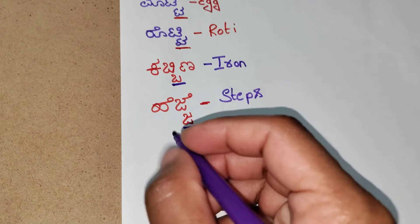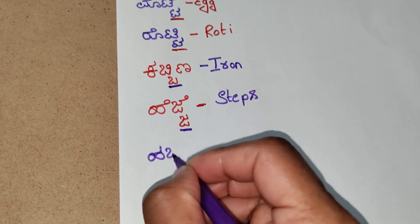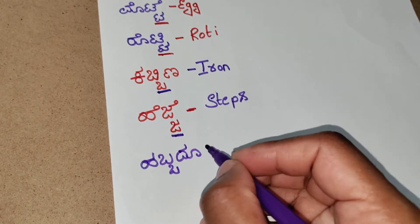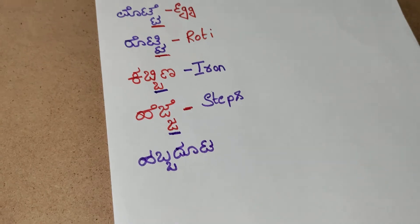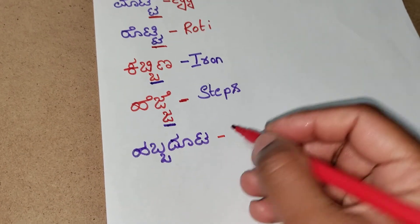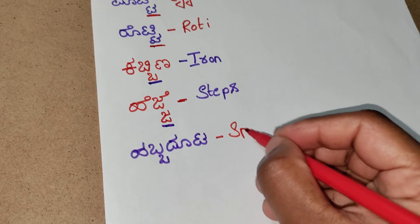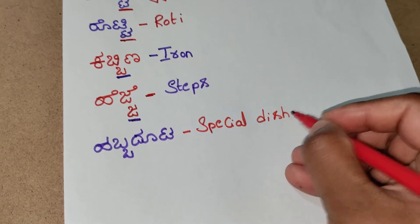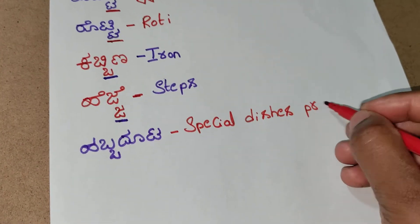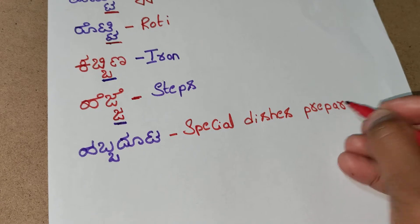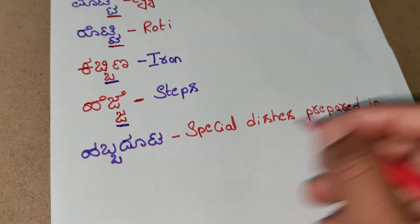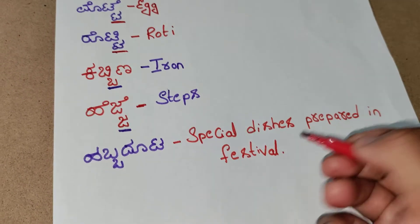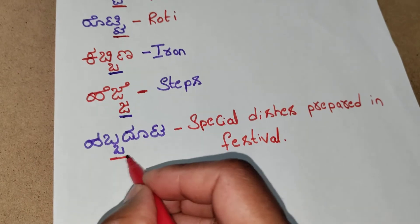The next word is habba dhouta. Habba dhouta — the meaning of habba dhouta is special dishes prepared in festivals. Here the otthakshara is bhavato.